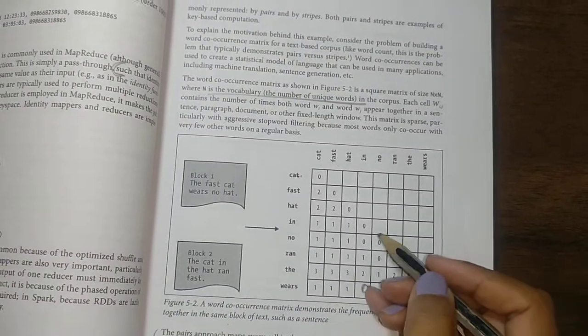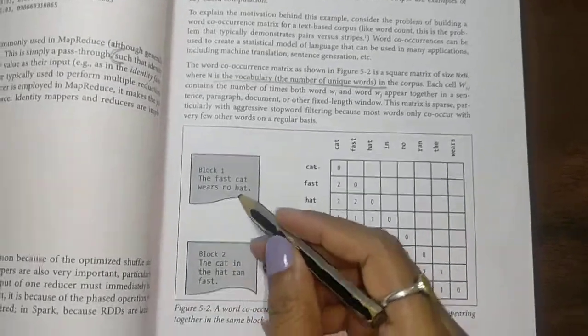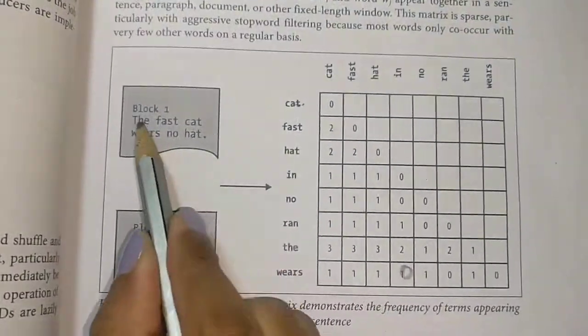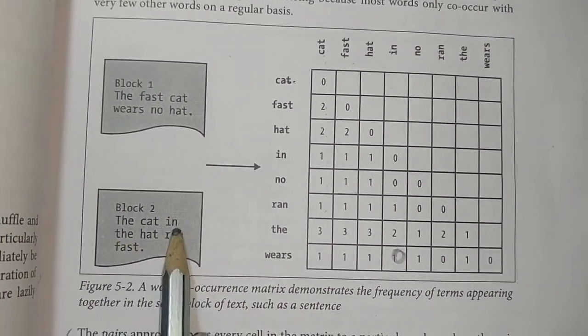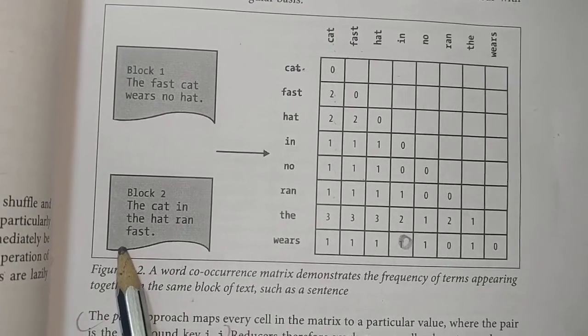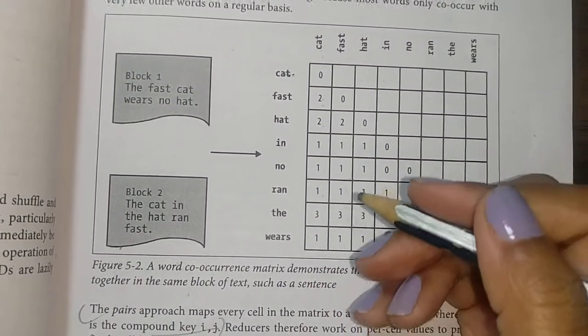is find how many words can occur with each other. We have two sentences to consider. The first one is: the fast cat wears no hat. And the second one is: a cat in the hat ran fast. I want to check which words are occurring with each other.